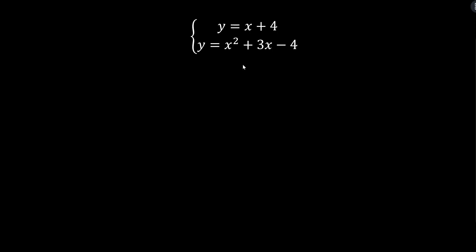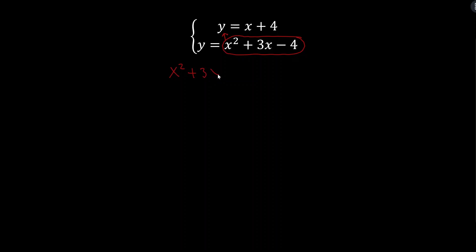I like this first example because it's a clear example of substitution. We have y equals and y equals, which is begging us to use substitution. I can take the whole expression equal to y and plug it in for y. When I do that, I have x squared plus 3x minus 4 equals x plus 4 — a nice quadratic I can solve. I always want to get zero on one side and everything else on the other side.